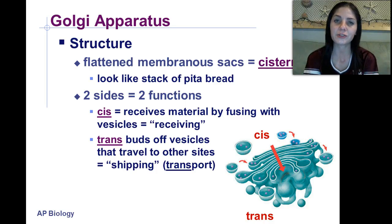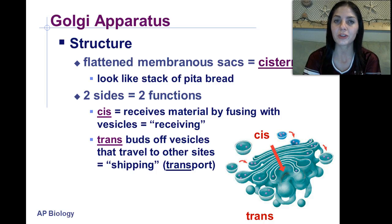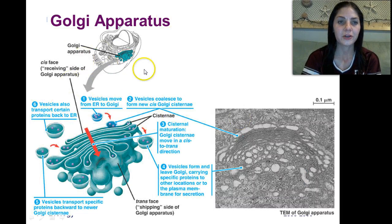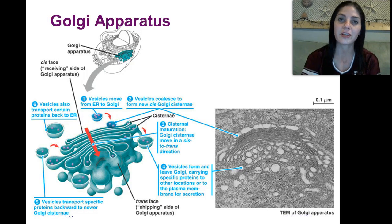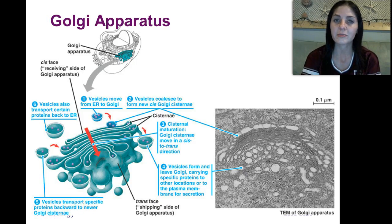The Golgi apparatus has two sides, each with a different function. The cis side receives vesicles from the endoplasmic reticulum. Once those vesicles fuse with the cis side, they're then tagged, sorted, and shipped to the trans side. The trans side is where vesicles bud off and get shipped to the parts of the cell that need them — many times the plasma membrane.